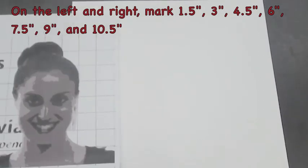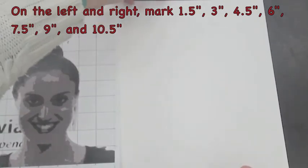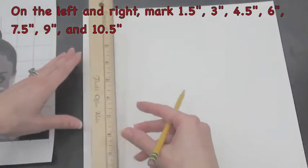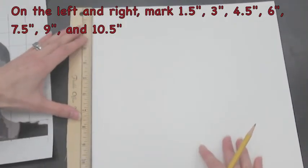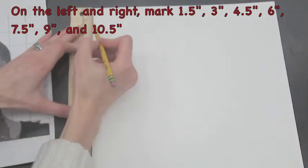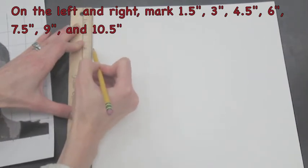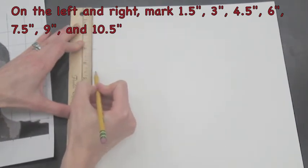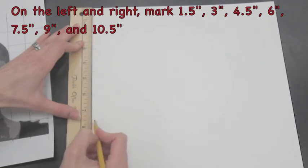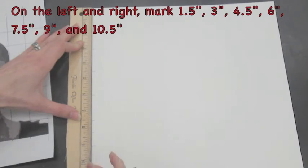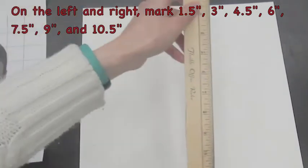If you measure this paper, you'll see it's exactly as big as the ruler, which is bigger than your original image. To have the same number of boxes on a larger paper, we're going to mark every inch and a half. So mark at 1 and a half, 3, 4 and a half, 6, 7 and a half, 9, and 10 and a half. This is on the left side.